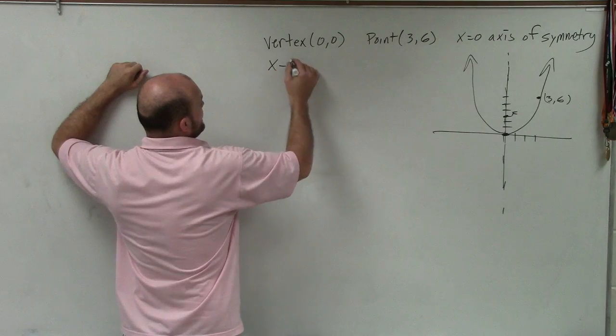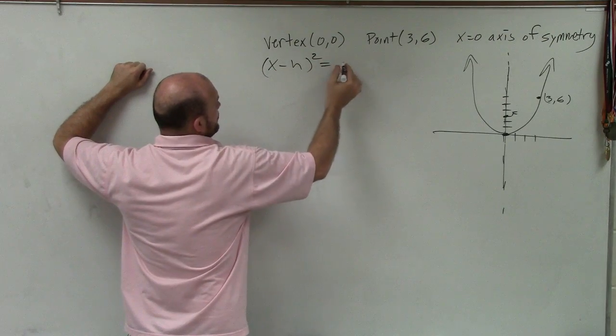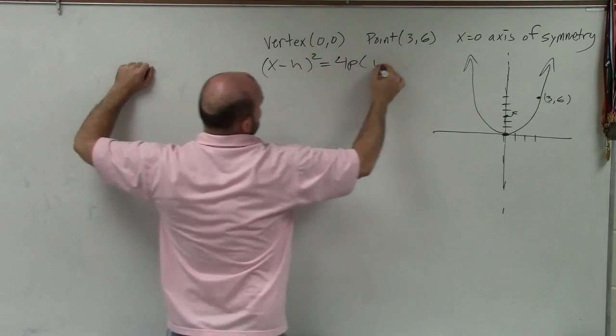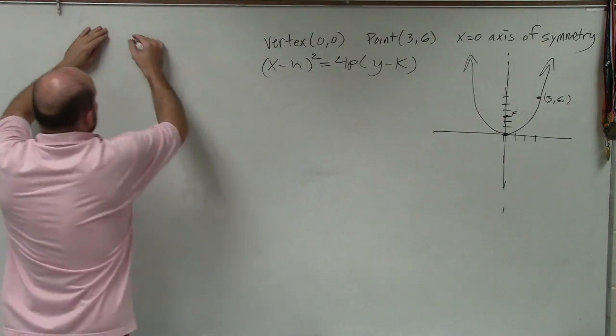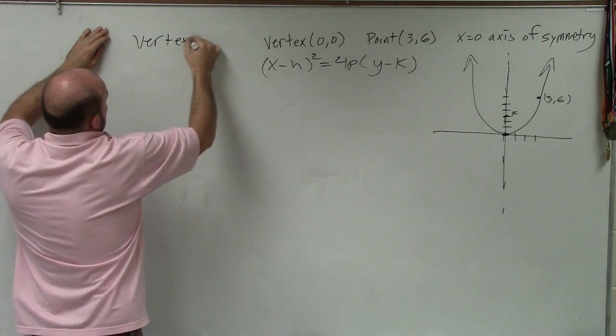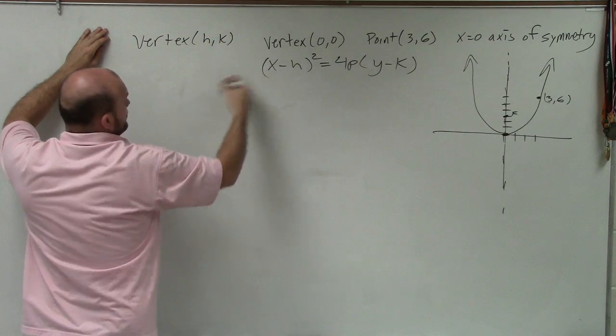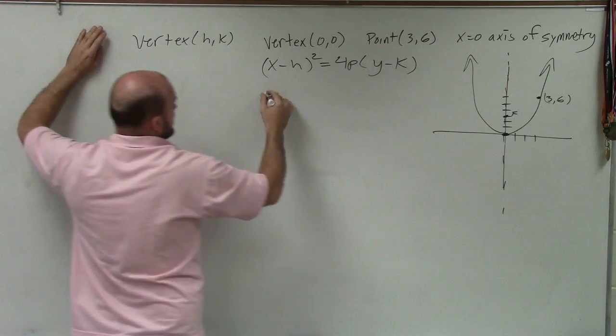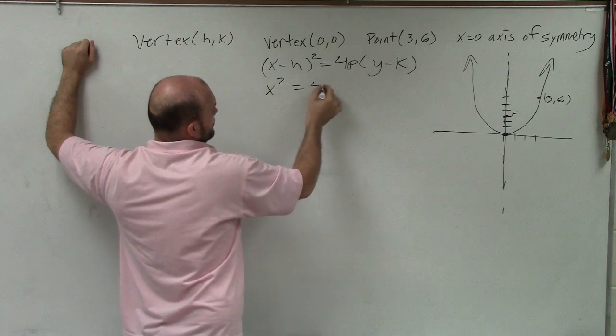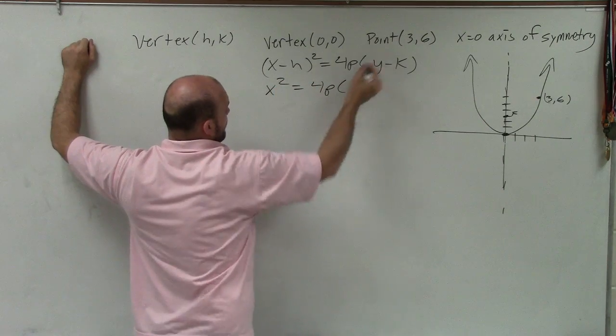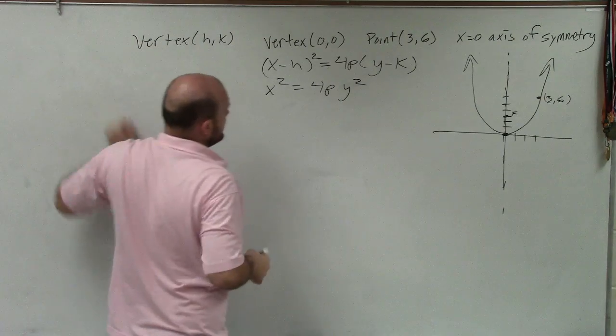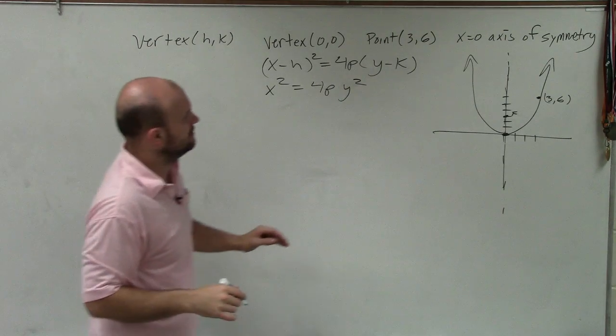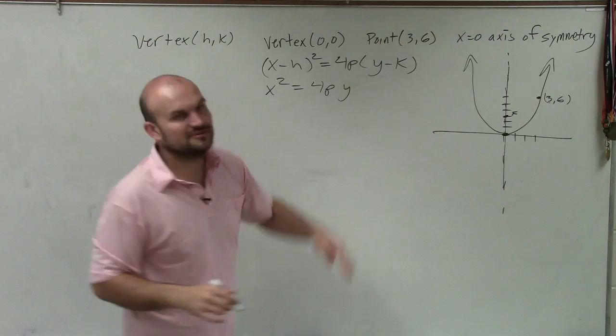So I know the graph is going to open up. So therefore I can use the form x minus h squared equals 4p times y minus k. All right. Now remember the vertex is h comma k, which in this case we have 0, 0, so I have x minus 0 is just x squared equals 4p times y minus 0 is just y. Not y squared, just y.